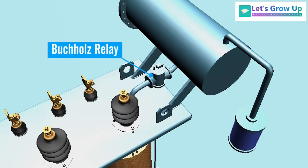Buchholz relay: It is placed over the connecting pipe that runs from the main tank to the conservator tank. The Buchholz relay senses the faults occurring within the transformer.